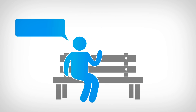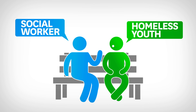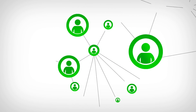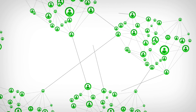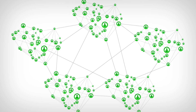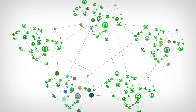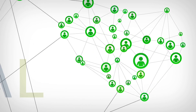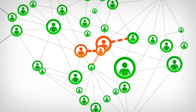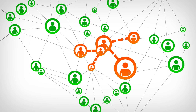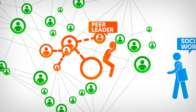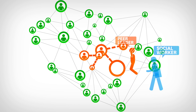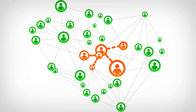First, social workers collect information from homeless youth about who they interact with. This allows Healer to map their friendships, creating a social network of the youth and their connections. This information is then analyzed by Heal, the core algorithm that powers Healer. Heal pinpoints which homeless youth in the network would make successful peer leaders. Social workers then educate these peer leaders about HIV prevention and encourage them to share their knowledge with their social circles.